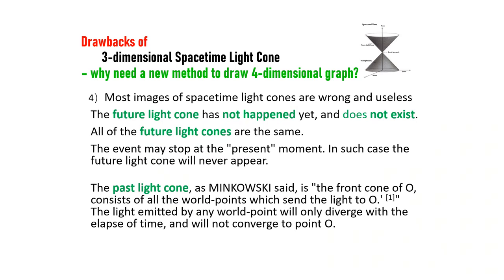The fourth, most images of spacetime light cones are wrong and useless. The future light cone has not happened yet and does not exist. All of the future light cones are the same. The yield may stop at the present moment. In such case, the future light cone will never appear. The past light cone, as Minkowski said, is the front cone of O consists of all the world points which send the light to O. The light emitted by any world point will only diverge with the ellipse of time and will not converge to point O.